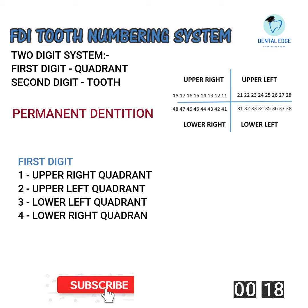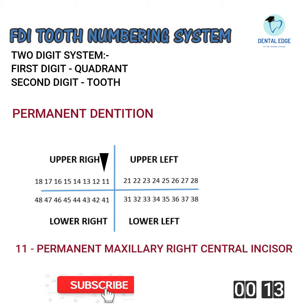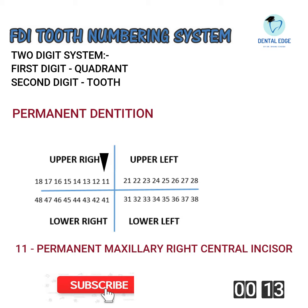For example, '11' represents the permanent maxillary right central incisor. So these were the key points in under one minute — just a quick revision. If you want to see detailed lectures, visit my channel and do subscribe right away.